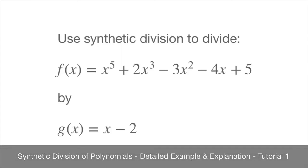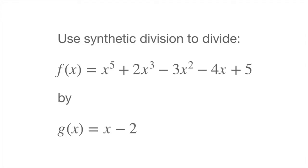We now learn about synthetic division of polynomials, and we're going to do so with some examples. The first example asks us to use synthetic division to divide f of x, which equals 2x to the power of 5 plus 2x cubed minus 3x squared minus 4x plus 5, by g of x, which is a linear function equal to 2x minus 2.